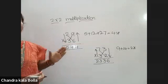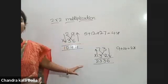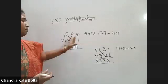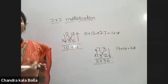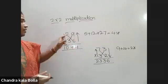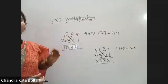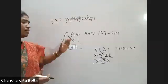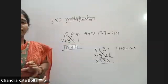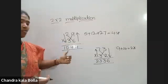2x2 multiplication is very simple. You make the values in the up and down direction, then do the overall additions, and then the multiplication. It is easy.